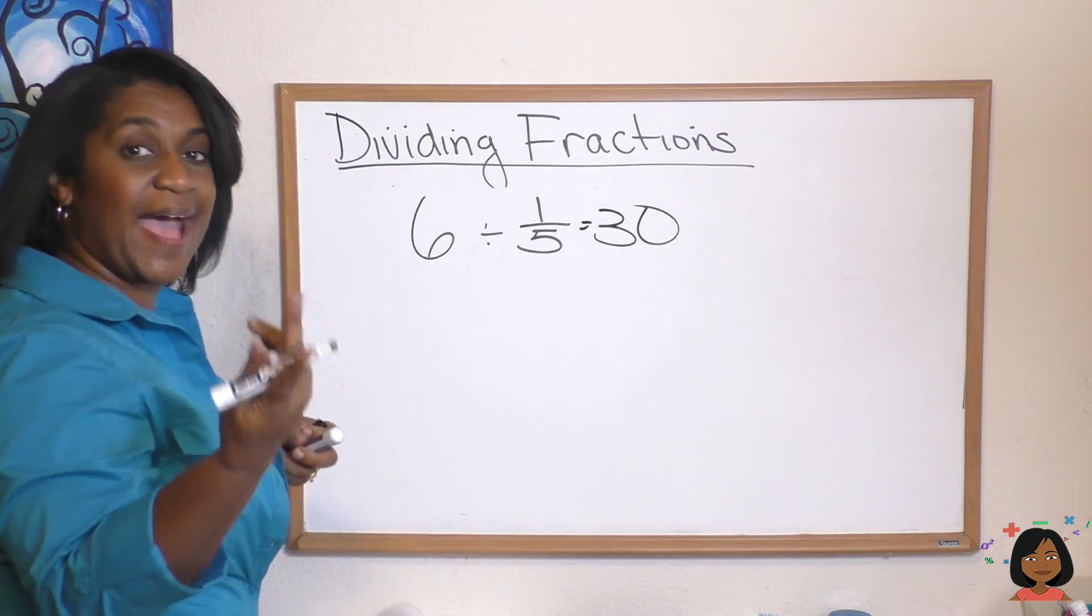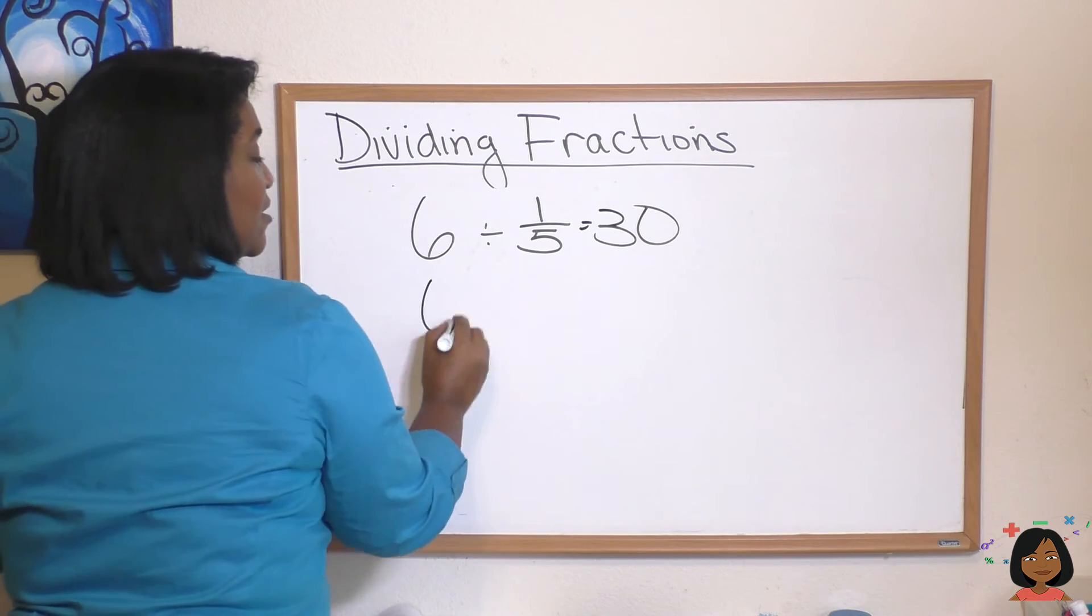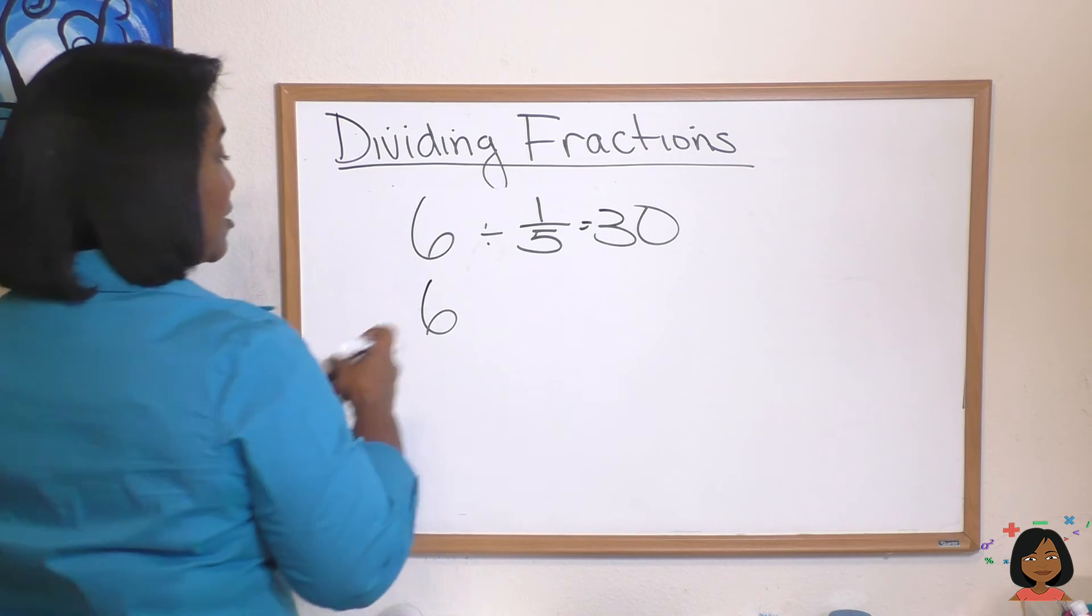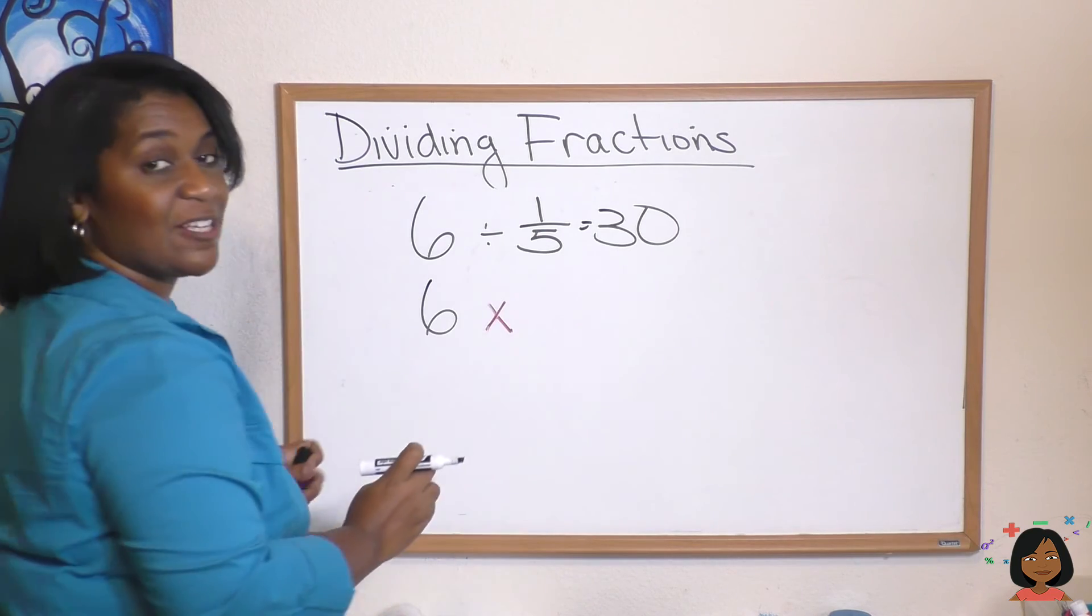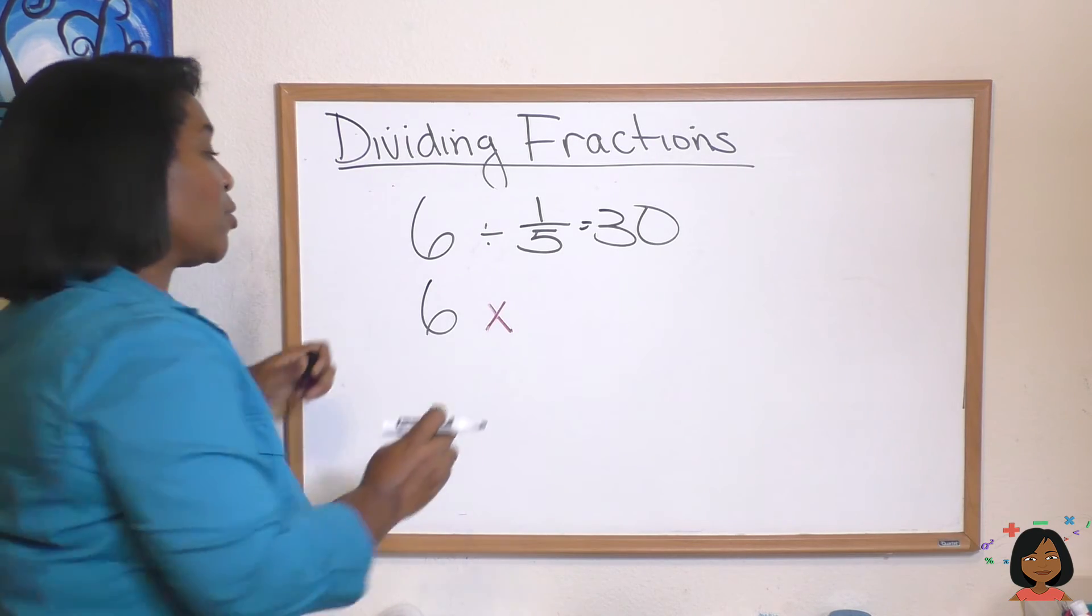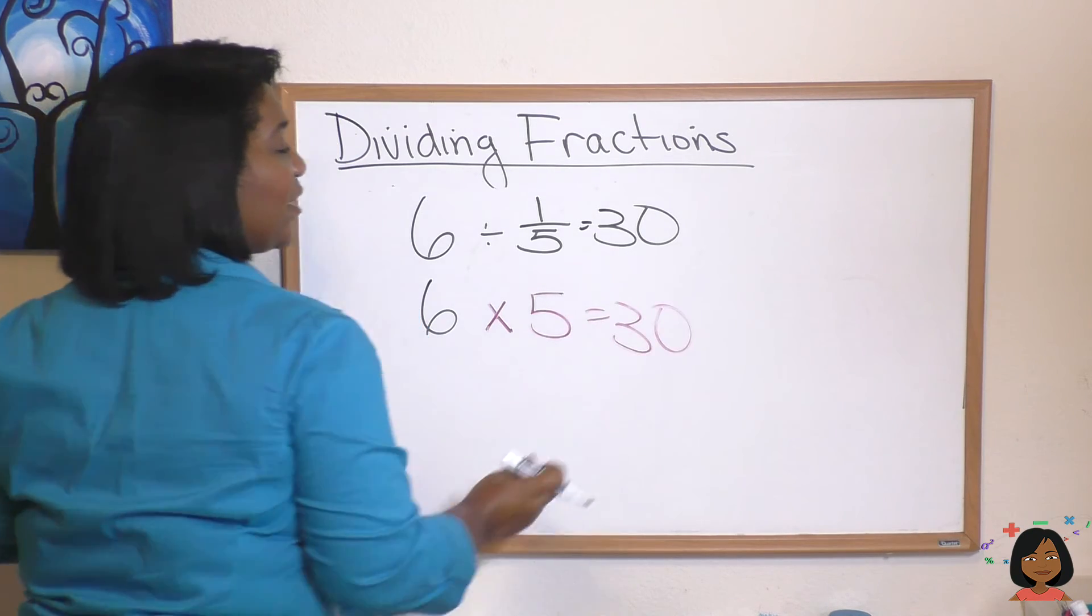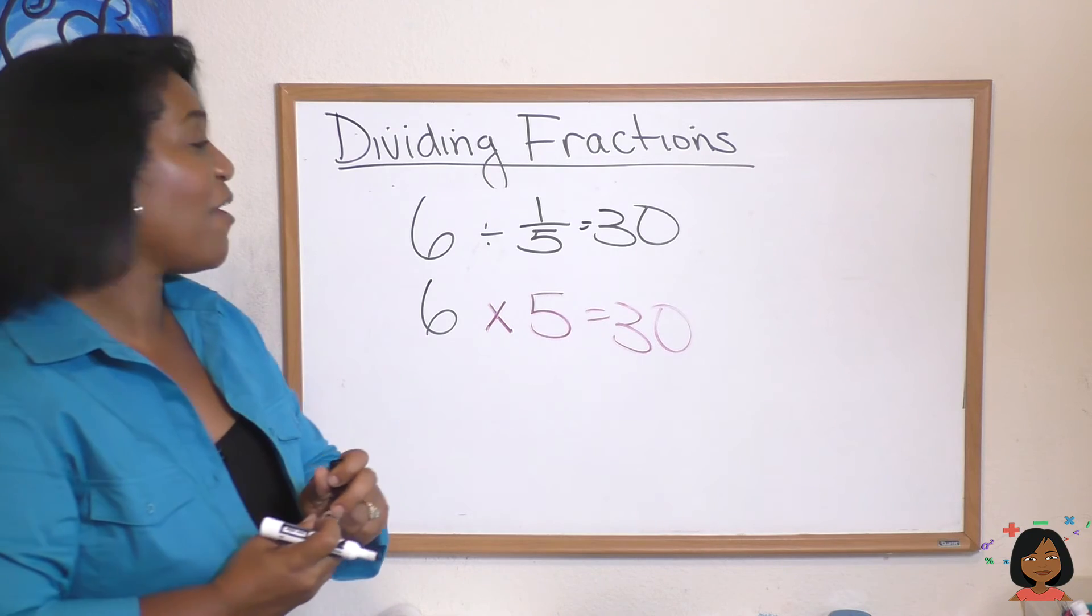We just thought it through but now let's try it with just math. Six, we can take our division sign turn it into a multiplication sign as long as we turn our one-fifth onto its reciprocal which is six times five and we still get 30. So that's the easy part.